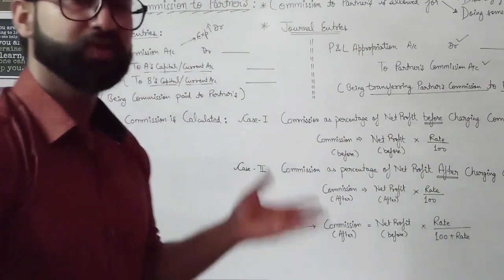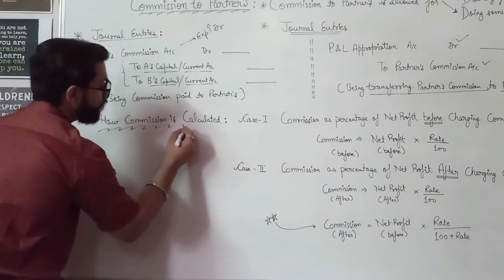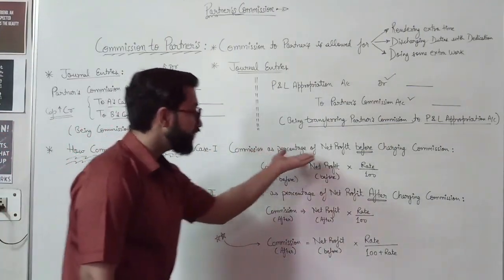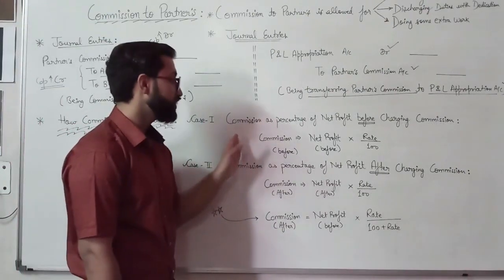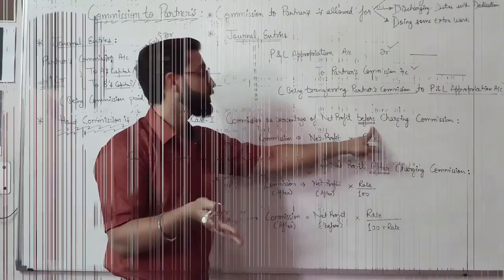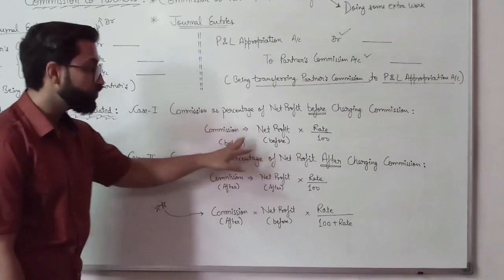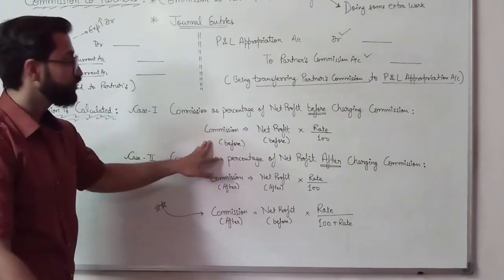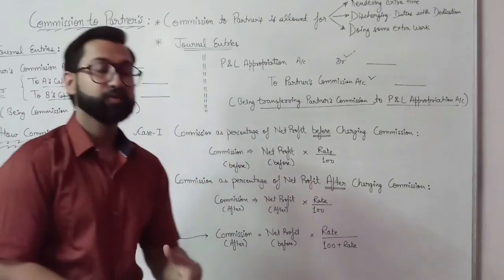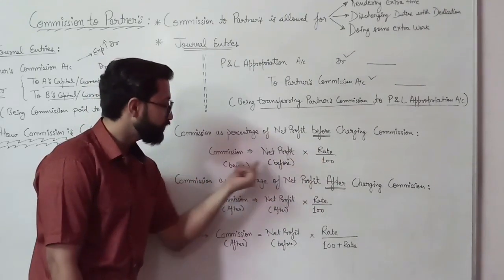These are the general entries which we have already discussed in previous videos. Now the most important thing in commission is how to calculate commission. There are two cases. Case one: commission as a percentage of net profit before charging such commission. In this case, you calculate commission from net profit from which no such commission has been deducted. The formula is simple: Commission = Net Profit × Rate / 100. Both items are 'before'.